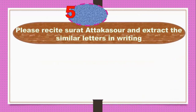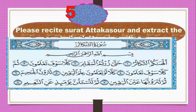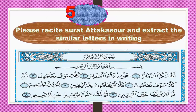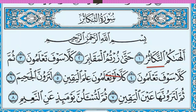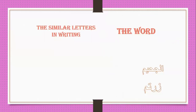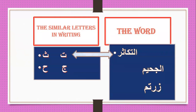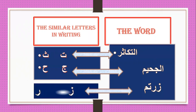Let's go to the last type of questions. Please recite Surat At-Takathur and extract the similar letters in writing. Can you find the similar letters in writing? Try. At-Takathur. Yes — Zah and Ra are similar. Well done. Very good.